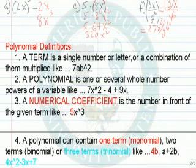Next we want to look at some polynomial definitions. A term is a single number or letter or combination of them multiplied, like 7 times a times b to the 2nd. Since they're all multiplied, it's still a single term. A polynomial usually means more than one, is one or several whole number powers of a variable, 7x to the 2nd power minus 4 plus 9x. If they're in descending order according to the powers of x, that's the normal way we like to write our polynomials. A numerical coefficient is the number in front of the given term, like 5x to the 3rd, 5 would be the numerical coefficient.